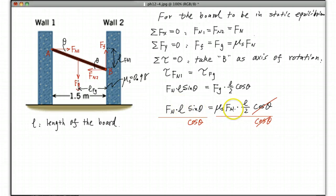And also divide by Fn times L and Fn times L. You have to divide the exact same thing here. So then this is gone, and Fn is gone, L is gone.